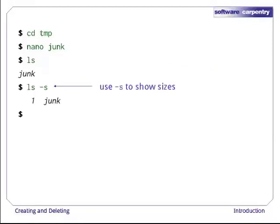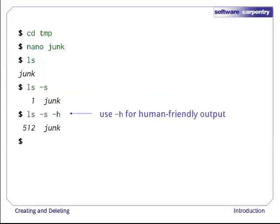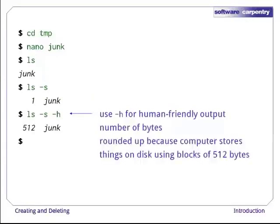Running ls with the -s flag shows us how large things are. Unfortunately, by default, Unix reports sizes in disk blocks, which probably isn't the least helpful option imaginable. If we add the -h flag, ls uses more human-friendly units for its output. Here, 512 is the number of bytes the file takes up. This is more than we actually typed in, because the computer rounds sizes up. The smallest unit of storage on the disk is typically a block of 512 bytes.